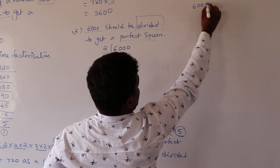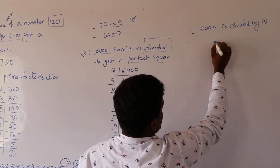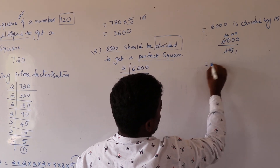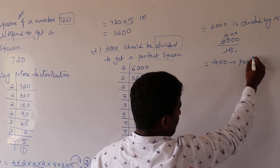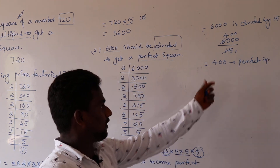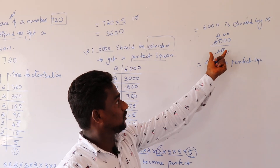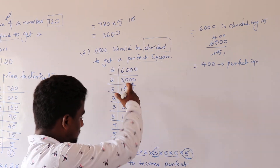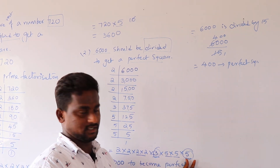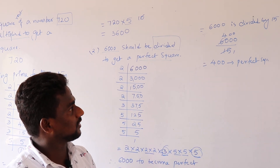Therefore, 6,000 divided by 15 gives 400. 400 is a perfect square — it is 20 × 20. So 6,000 is not a perfect square, but dividing by 15 makes it 400, which is a perfect square. We found 15 using prime factorization by identifying the unpaired factors 3 and 5. The answer is 15. In the next class we will continue with the next two sums.